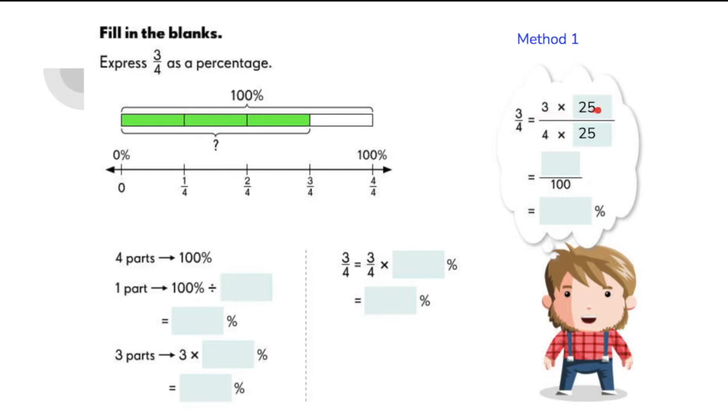So if we multiply the two, we'll get an answer of 75. 4 times 25 is equal to 100. So therefore, 3 fourths is equivalent to 75 out of 100 or simply 75%.